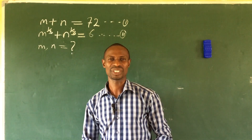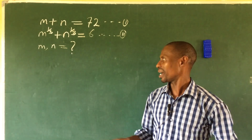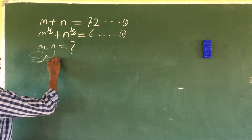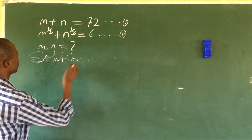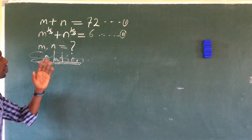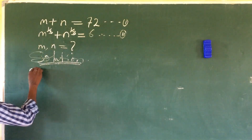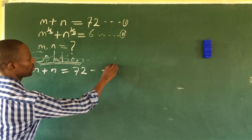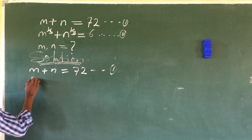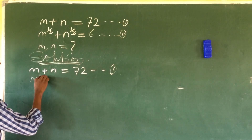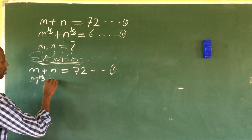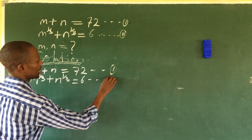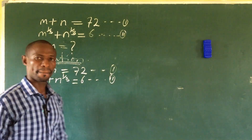Let's take our solution. We write down equation one: m + n = 72, and equation two: m^(1/3) + n^(1/3) = 6.